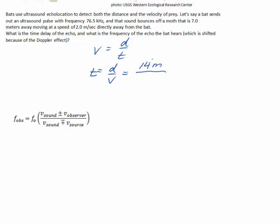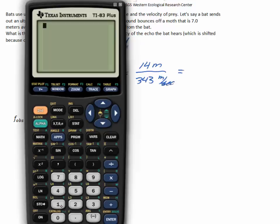That is, the sound travels a round trip, and so we need to double whatever the distance to the moth is. So the sound travels 14 meters, the sound is traveling at 343 meters per second. And we get, rounding, 0.041 seconds, or we can say 41 milliseconds as the time delay for the echo to come back to the bat.